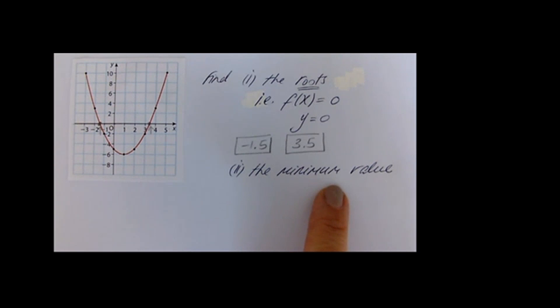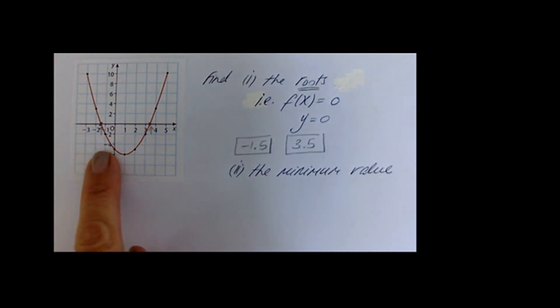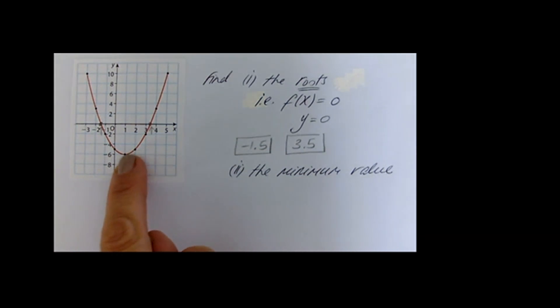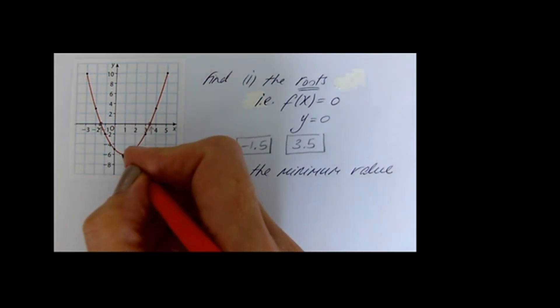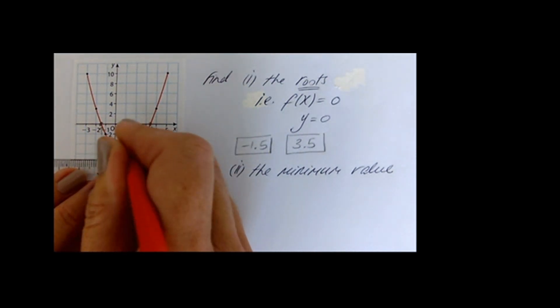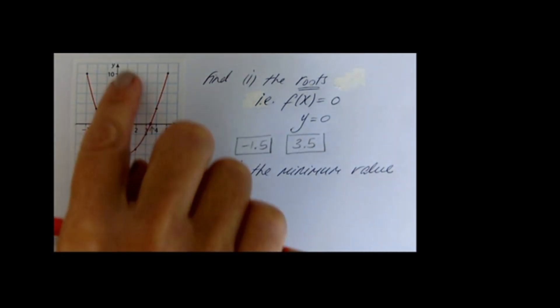Now this question asks for the minimum value. The minimum value is basically the lowest value on your curve, right down here at the lowest point. Go to that point and read off the y, because you want to see how low it is — it's the vertical line that tells you how high or how low. And minus 6 is the minimum value.